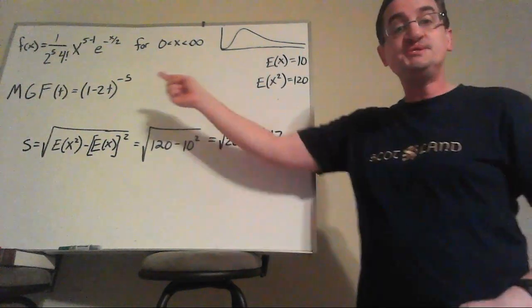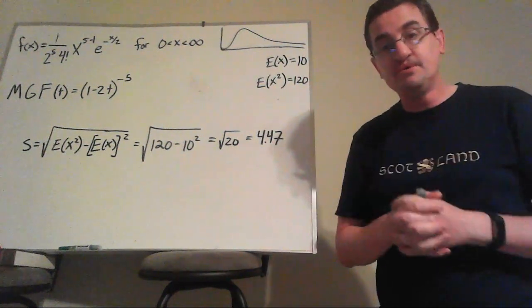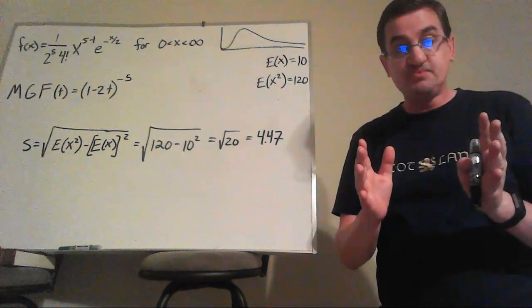What do you need to know? You just need to know, take the derivative for as many times as you need that moment, set the t equal to zero, and then you'll have all the moments you want.